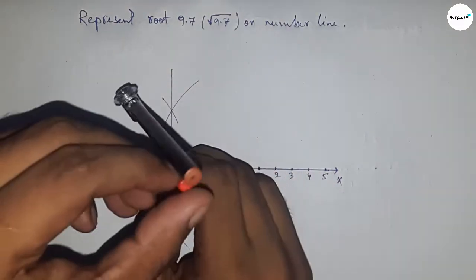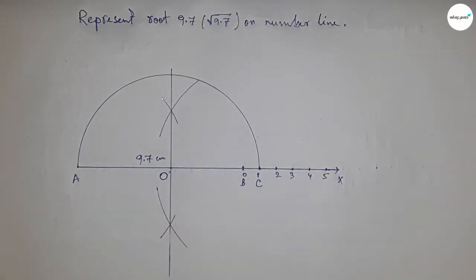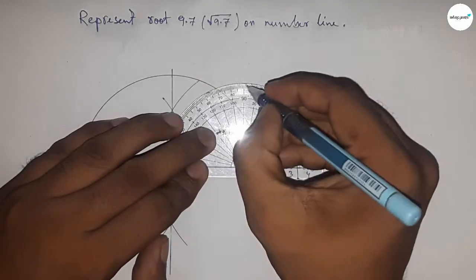Draw a 90-degree angle at point B using a protractor. This perpendicular line will meet the semicircle at point D.